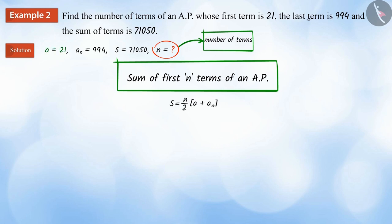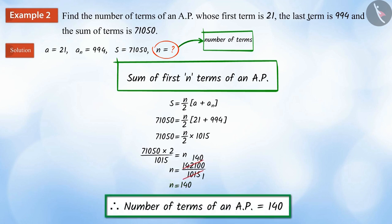By substituting the values of a, an and s in the formula, we get n equals to 140. Therefore, there will be a total of 140 terms in the arithmetic progression.